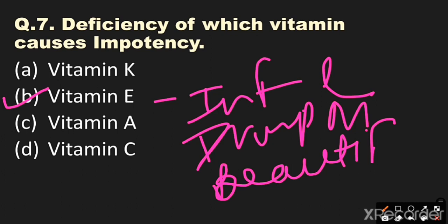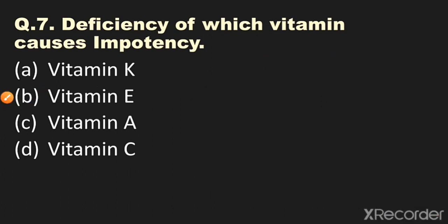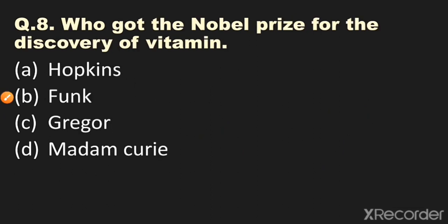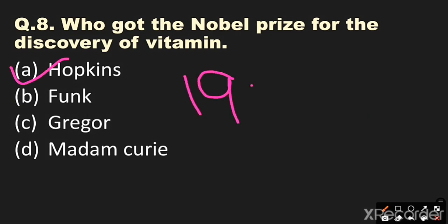Question number eight: Who got the Nobel Prize for the discovery of vitamins as essential food factors? Options: A) Hopkins, B) Funk, C) Grgor, D) others. The answer is Hopkins — Hopkins got the Nobel Prize for the discovery of vitamins in 1930.